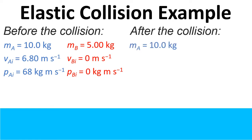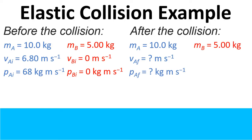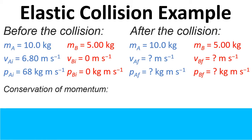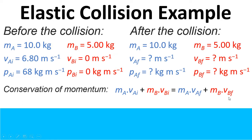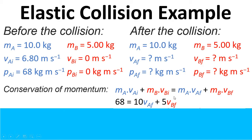After the collision, block A is still 10 kilograms but we don't know its velocity and we don't know its momentum. Block B is 5 kilograms and again we don't know its velocity and we don't know its momentum. From the conservation of momentum equation, the mass of block A times its initial velocity plus the mass of block B times its initial velocity equals the mass of block A times its final velocity plus the mass of block B times its final velocity. Substituting in the known values — 68 and 0 — we get an equation in terms of the final velocity of A and the final velocity of B.